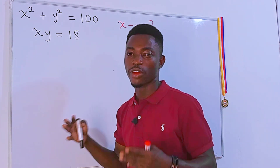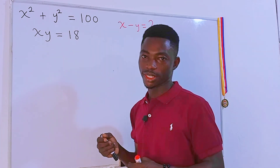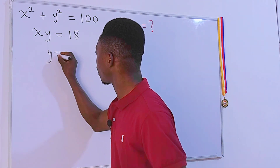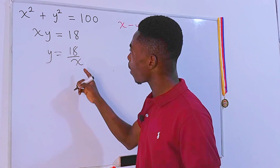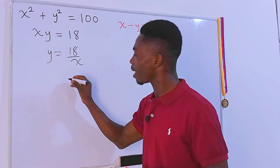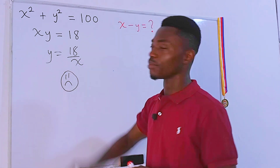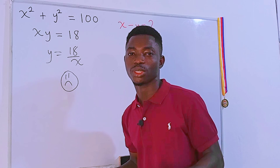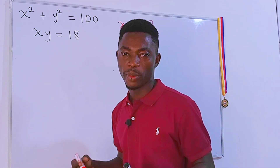From the second equation, we can make any of the variables the subject and then substitute it into the first equation. For example, if we make y the subject, we get y equals 18 divided by x. But I'm not going to use this method because there is an easier approach.